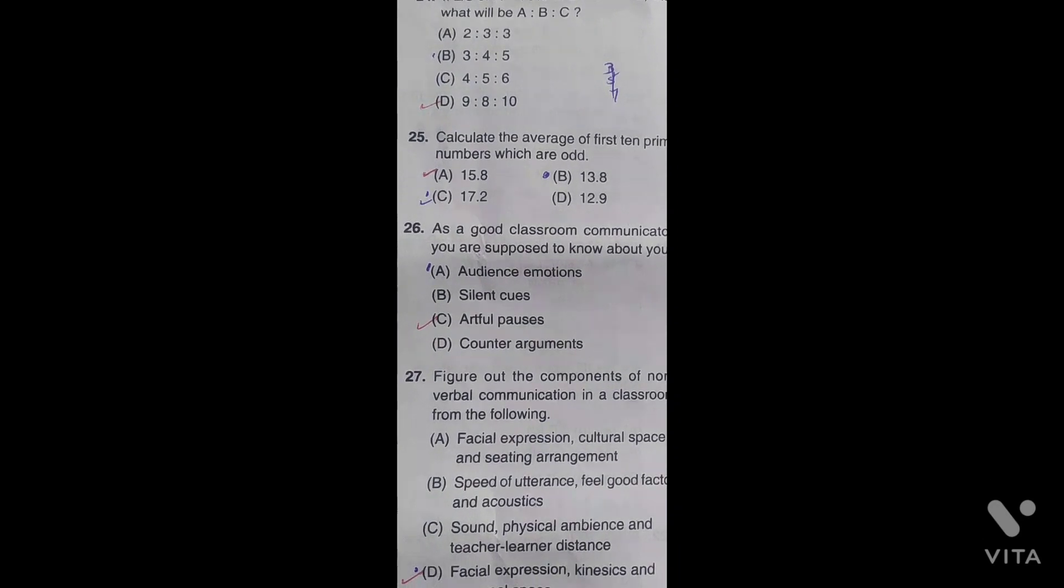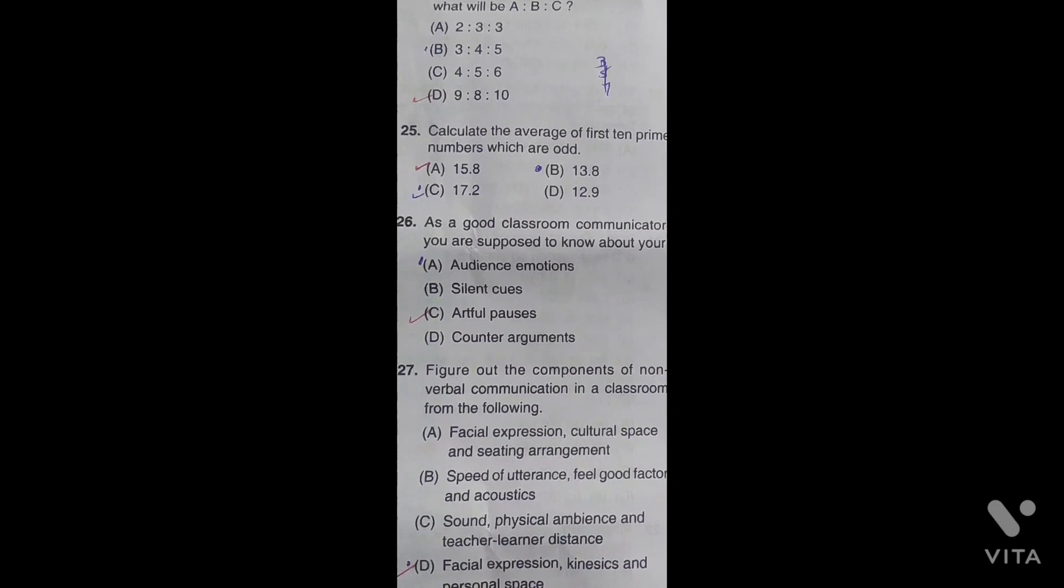Calculate the average of the first 10 prime numbers which are odd. The correct answer is 15.8.